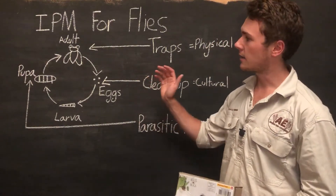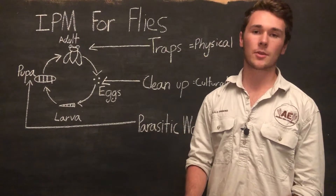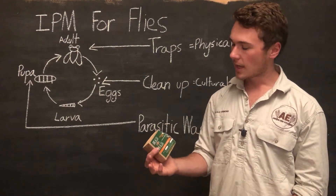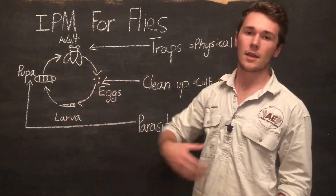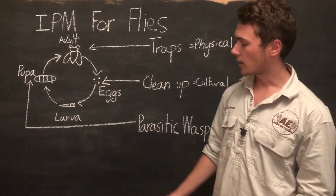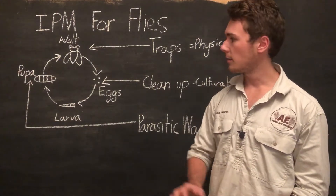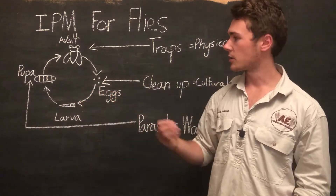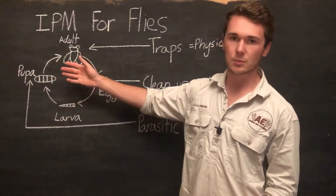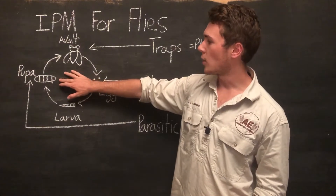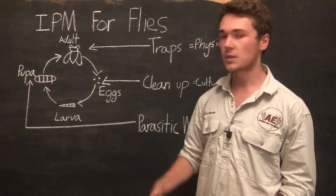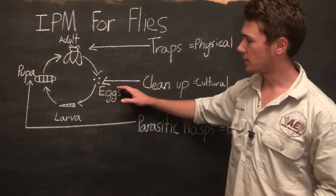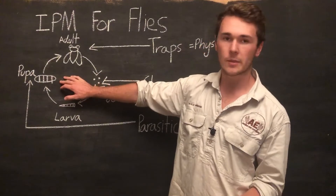Bugs for Bugs sends out bags containing pupa with the parasites inside. We put them in a small enclosure so they can hatch and emerge, which protects them from the elements and predators. They emerge and go find more pupa to lay their eggs into. So we've reduced the adult flies with traps, reduced the eggs through cultural cleanup, and reduced the pupa with the parasitic wasps.